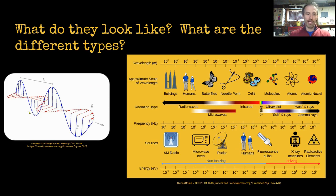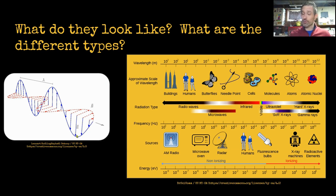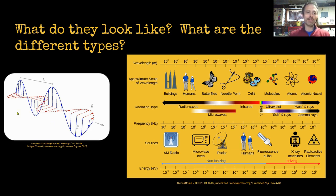This is what electromagnetic waves look like. They have electricity and they're flying through everywhere — through space, through our atmosphere, through the earth. Some of them can't go through the earth, some of them can. And there's electricity going through the air as well as magnetism — like a magnet going through the air — as well as electricity.